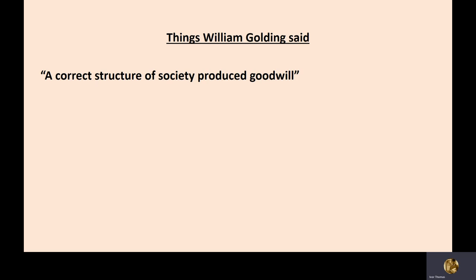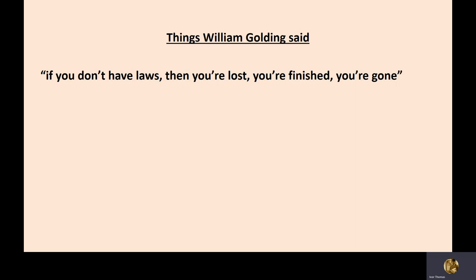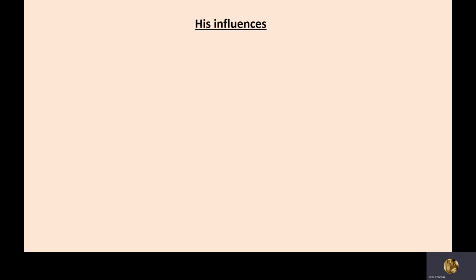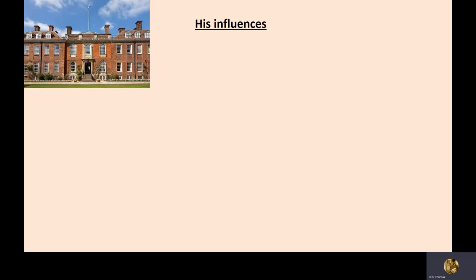He's obsessed in this book with the idea — it's an allegory for the breakdown of civilisation. A correct structure of society produces goodwill, but if society is disordered and there aren't any laws, then society breaks down. Men create evil like bees create honey, he said. And if you don't have laws, you're finished. So in Lord of the Flies, we have polite schoolboys becoming wild, basically, without adults around. He thought that children from this respectable background, without rules, would lose that veneer of civilisation, he calls it.